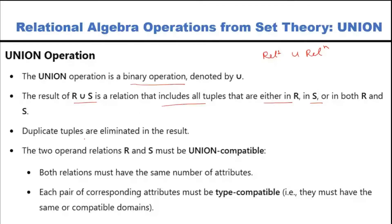The main thing is that duplicate tuples are eliminated in the result. Remember, a relation is a set, and by definition a set does not contain any duplicates. But there is one condition: if you are applying R union S, the relations must be union compatible. What is the meaning of union compatible? Union can only be taken from the same set of attributes.